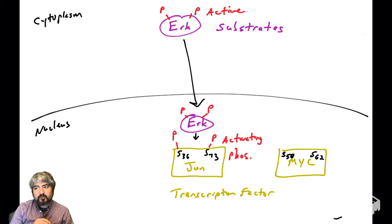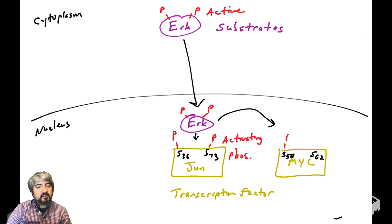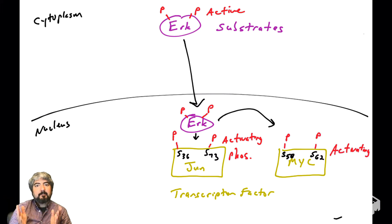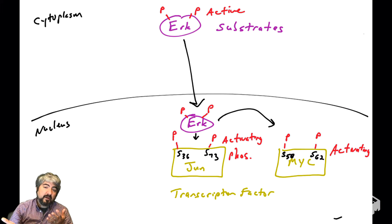Another transcription factor we'll introduce is MYC, sometimes known as c-MYC. I've drawn a serine at position 58 and a serine at position 62. ERK can phosphorylate that transcription factor — MYC is a transcription factor. When it is phosphorylated by ERK, MYC becomes active, which can then find promoters and turn on genes.